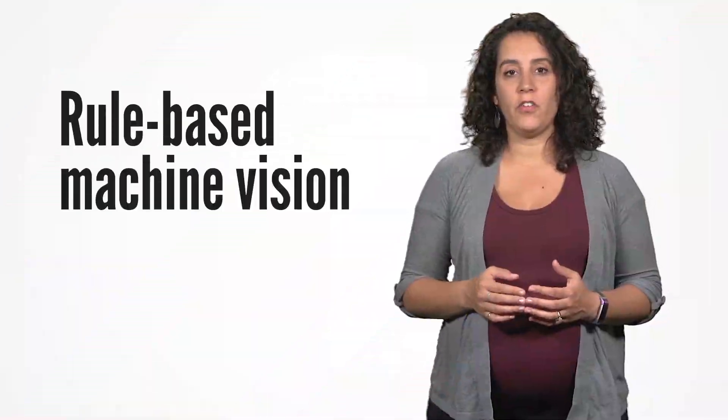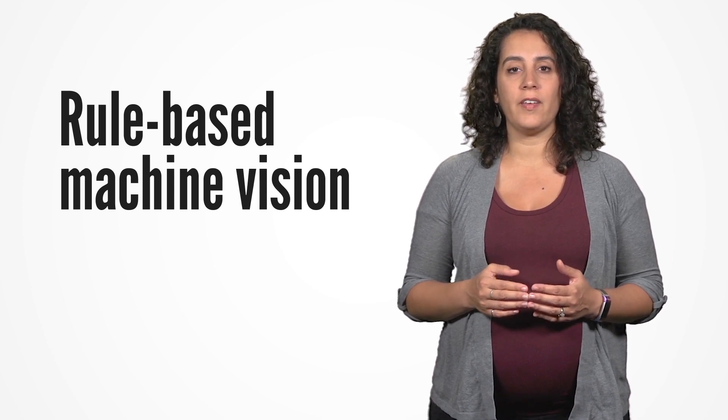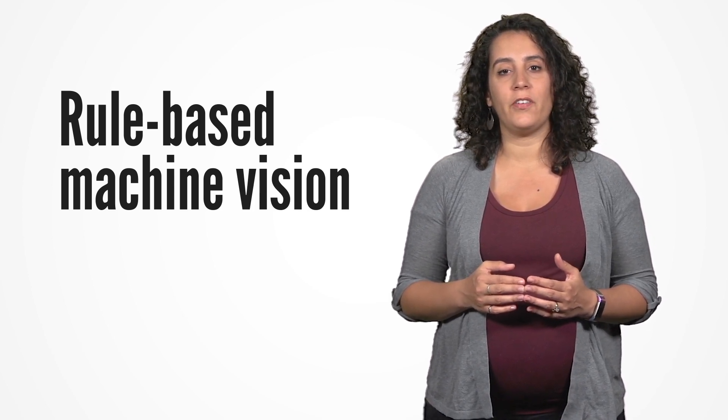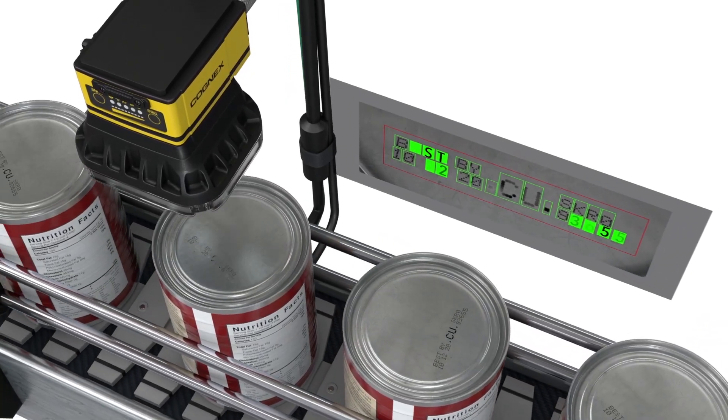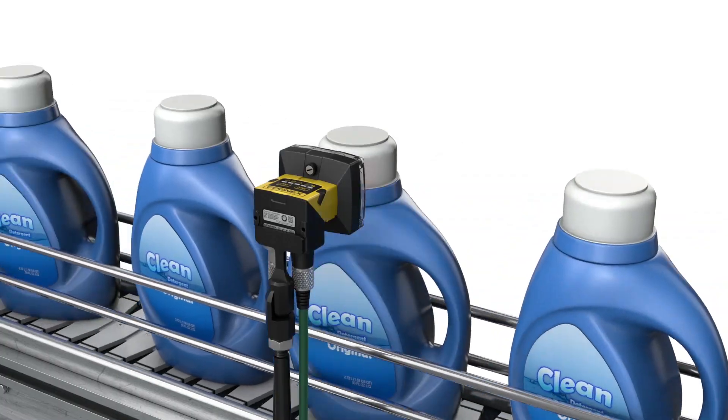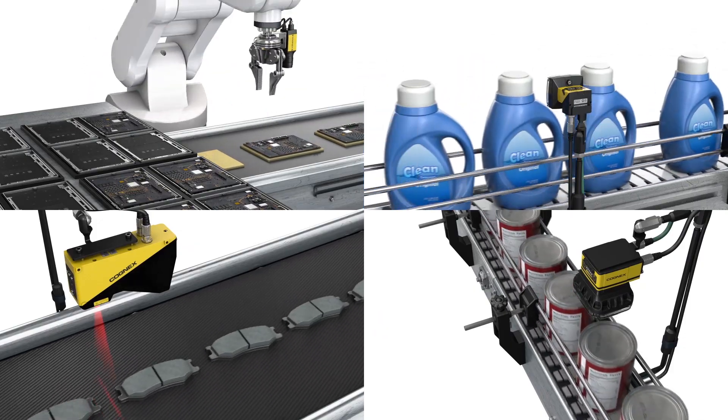Traditional rule-based machine vision performs reliably with consistent and well-manufactured parts and excels in high-precision applications. Those include guidance, identification, gauging, and inspection, all of which can be executed at extremely fast speeds and with high accuracy.